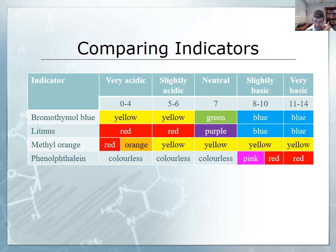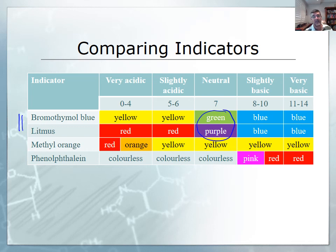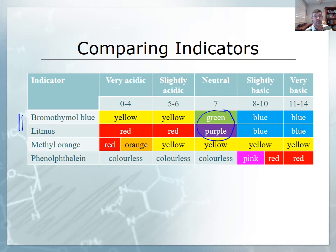Looking at the table, we can see that two of these indicators change color in the mid-range — the neutral range — giving us an indication of neutrality. Bromothymol blue is yellow in acidic solutions, blue in basic solutions, and a combination of yellow and blue produces green in neutral solutions. Litmus is red in acidic solutions, blue in basic solutions, and a combination of these two gives purple in the neutral range.